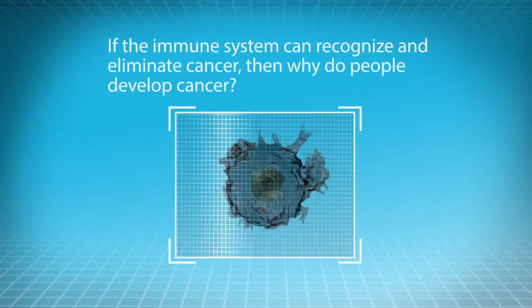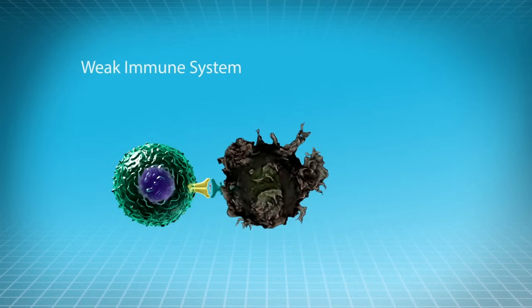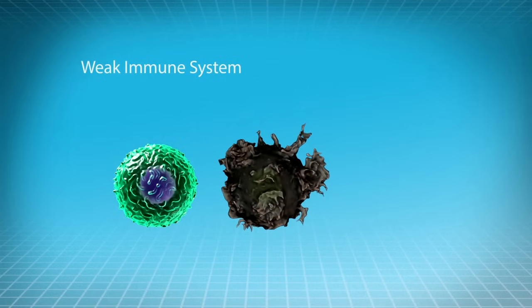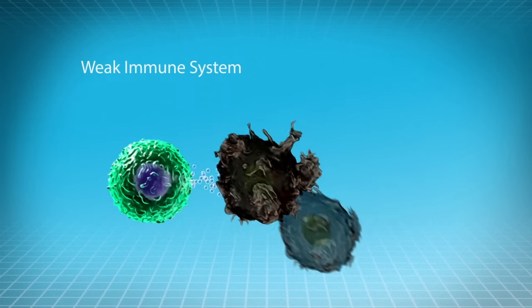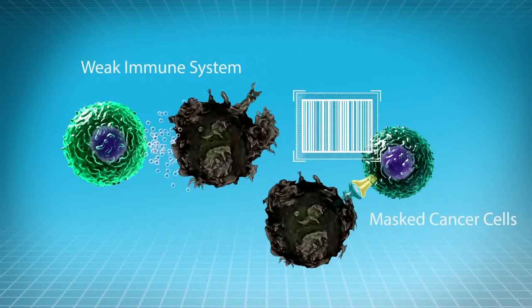But if the immune system can recognize and eliminate cancer, then why do people develop cancer? Sometimes the immune system fails to do its job. The immune response against cancer may not be strong enough, or cancer cells may evade the immune system.